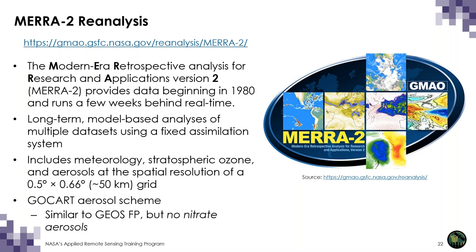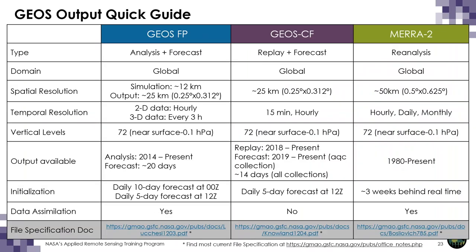The Modern Era Retrospective Analysis for Research and Applications Version 2, or MERRA-2, provides output from 1980 to the present at about 50 km spatial resolution — slightly lower resolution than FP or CF. MERRA-2 output contains a wide variety of meteorological, chemical, and aerosol variables. Aerosols are simulated using the GOCART aerosol scheme, except there are no nitrate aerosols in MERRA-2. Output is available on hourly, daily, and monthly scales, with 72 vertical levels, and the latest output runs a few weeks behind real-time.